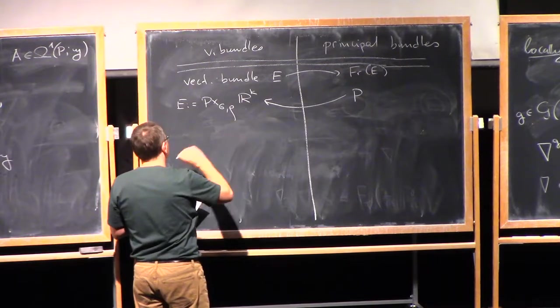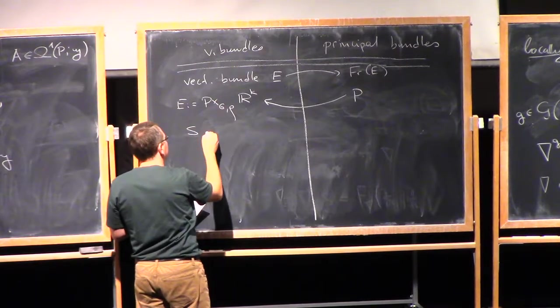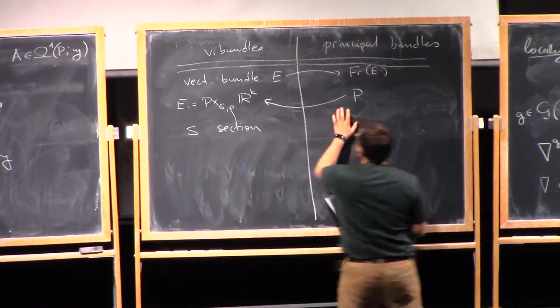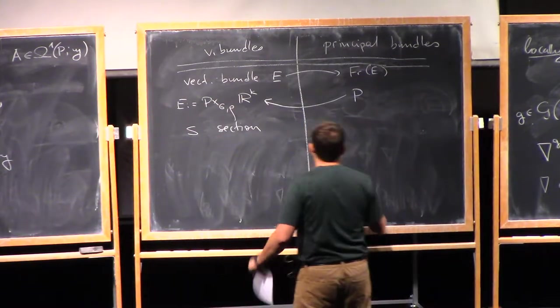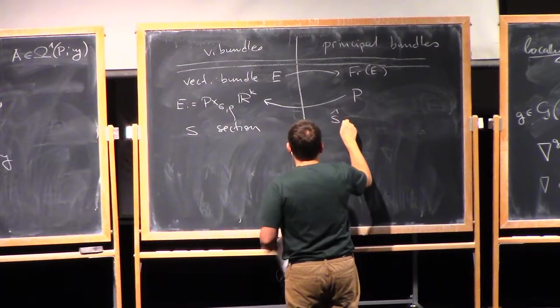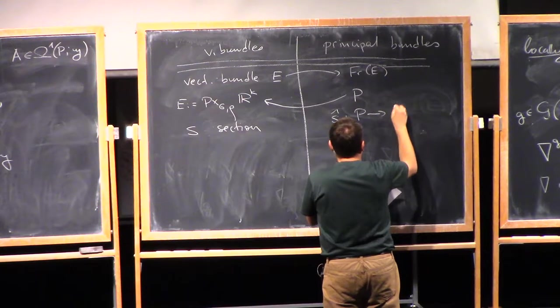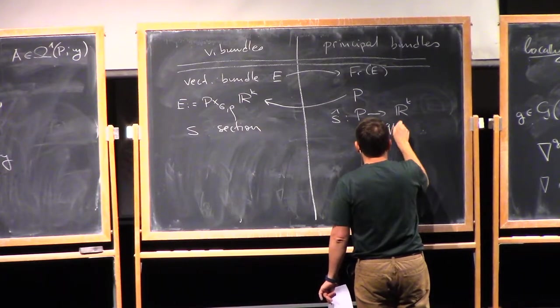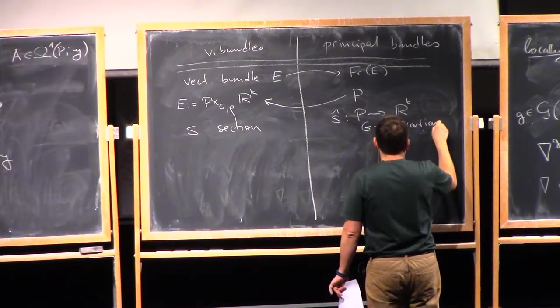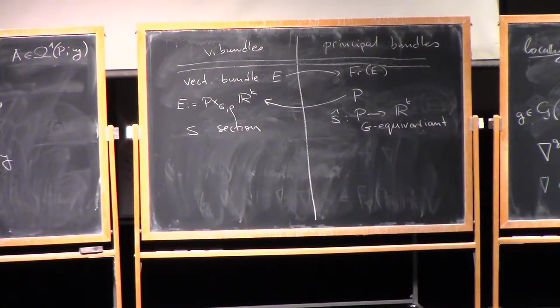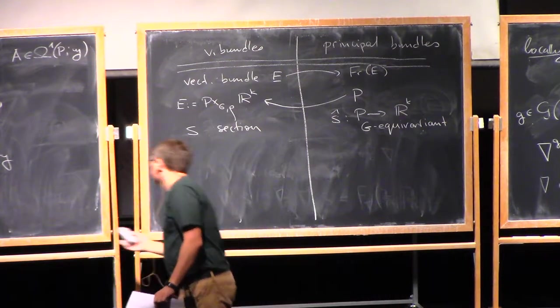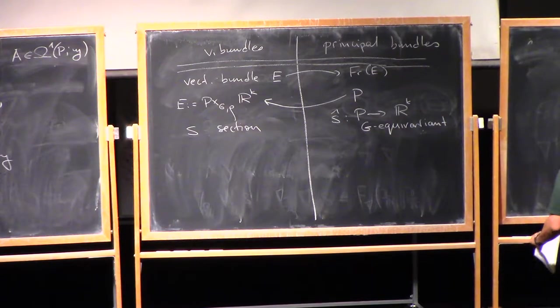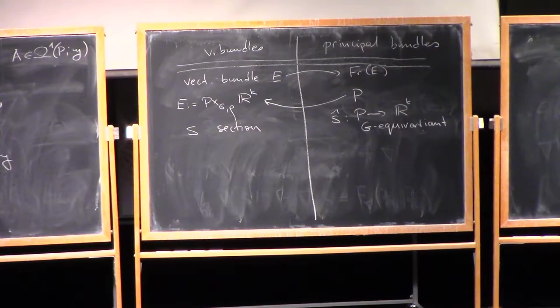But let us perhaps go a little further. So if you have a section S, what does this correspond on the right-hand side? So it turns out that this corresponds to an equivariant map from P into a representation R^K, and this is required to be G equivariant.